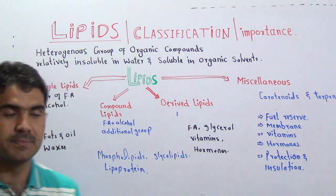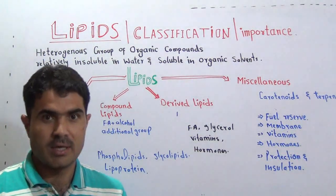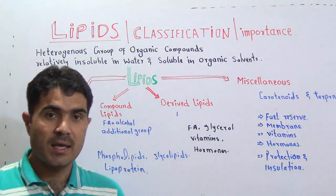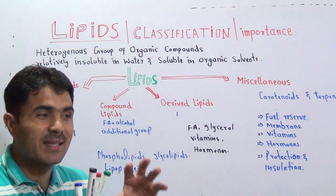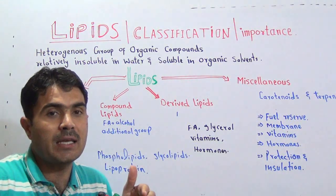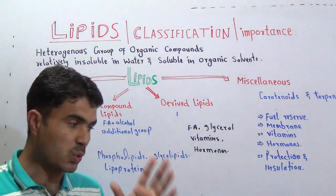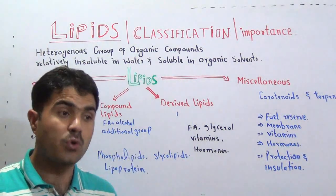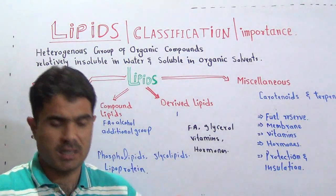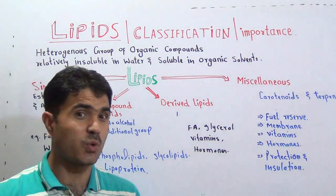In the definition of lipids, it is written as a heterogeneous group of organic compounds. Lipids are organic compounds, no doubt. But the word heterogeneous is something we should focus on. Heterogeneous means that because lipids contain different types of molecules and different types of compounds, you cannot define them precisely. That is why we use the word heterogeneous. There are complex compounds present in lipids, because of which we cannot define them precisely.